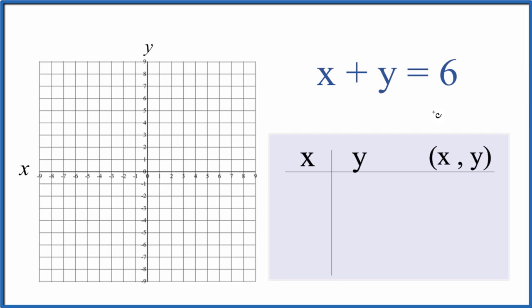The first way is you could use slope-intercept formula. You could rearrange this into slope-intercept formula and graph it that way. There's a link at the end of this video on how to do that. In this video, we're going to use a table of values to figure out the graph for x plus y equals 6.